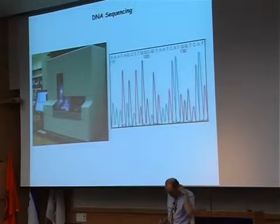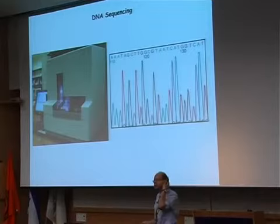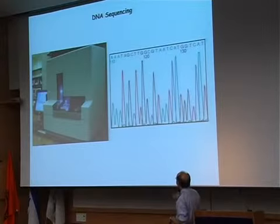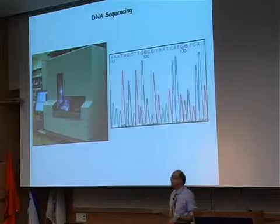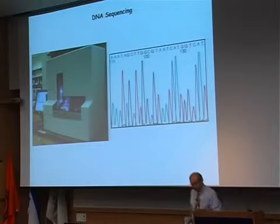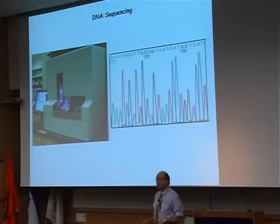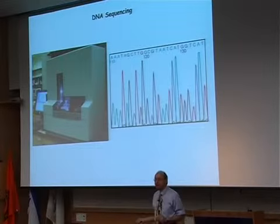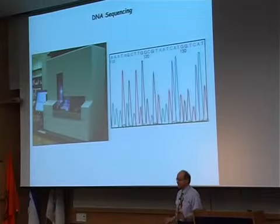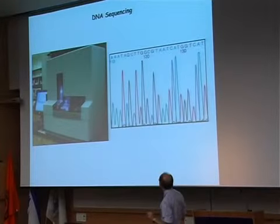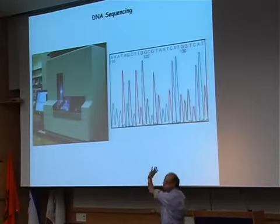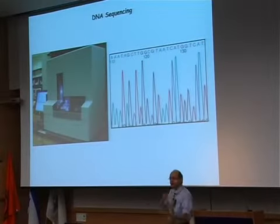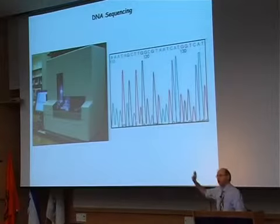DNA sequencing is a technology that's about 30 years old now. My dissertation was sequencing 10,000 bases of DNA — it took me three years. This machine, which costs a few hundred thousand dollars, can do that in half an hour. The DNA goes in, and out comes a chromatogram with four different colors — green, red, black, and blue representing the four letters — and you just read it. Powerful technology.